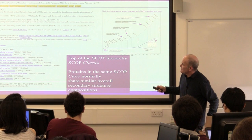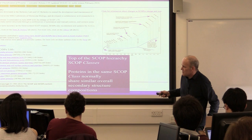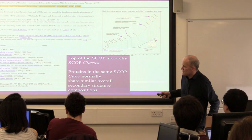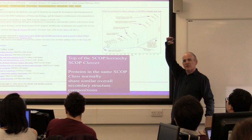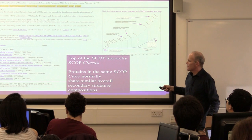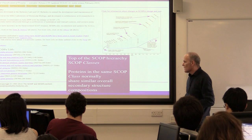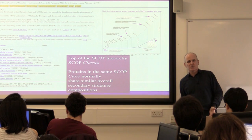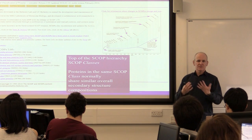If you go to SCOPe, you come to their home page with classes at the top. They classify protein domains into all-alpha proteins, all-beta proteins, alpha-and-beta, alpha-plus-beta, and multi-domain — 11 different classes in total. At the top of the hierarchy, proteins share the same overall secondary structure composition: all helical, all beta, alpha-beta in a particular way, and so on.